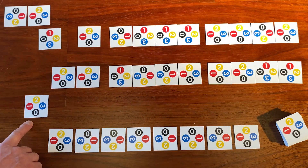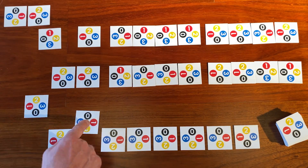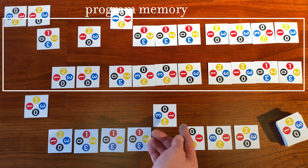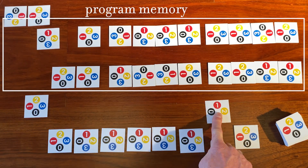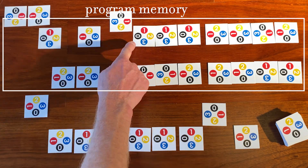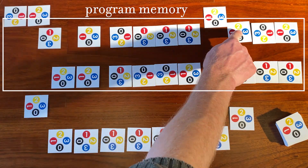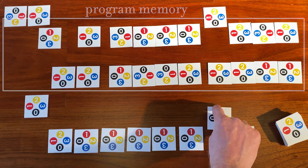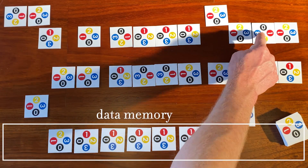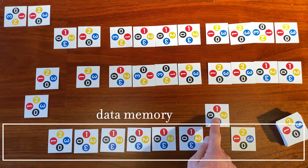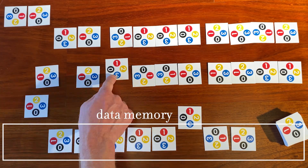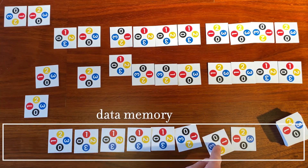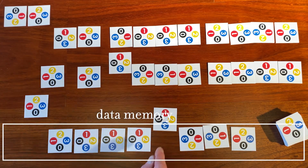Here it is, running a program. These cards at the top are program memory — that's where the program's instructions are stored. And this row of cards across the bottom, that's the data memory. That's where all the fun happens; it's where the instructions look and where the results go.